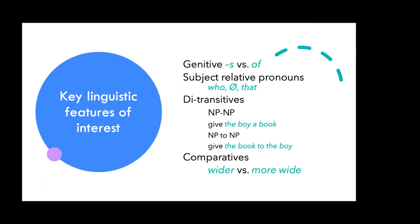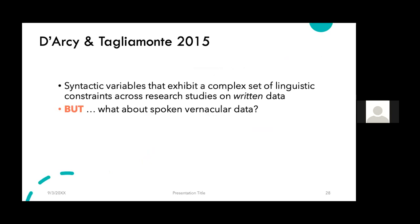Let me turn now to a set of key linguistic features of interest in English studied extensively, mostly in historical written documents, and in all cases considered to be syntactic: the genitive, subject-relative pronouns, ditransitives, and comparatives. In the genitive, there's a choice between 's' and 'of.' In subject-relative pronouns: 'who,' zero, and 'that.' In ditransitives, you can have an NP-NP construction or a prepositional one. In comparatives, you get two forms: either the '-er' or the 'more' construction. In the early 2010s, my colleague Alexandra Darcy and I had completed studies of each of these features in the vernacular spoken data.